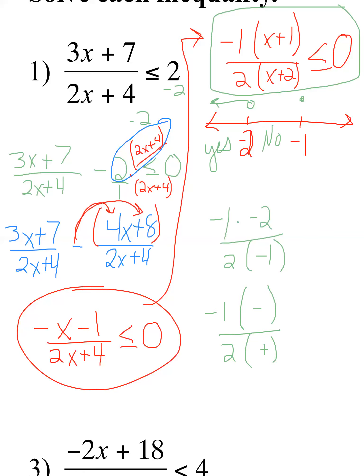For a number greater than -1, I'll pick 0. Plugging in 0: numerator gives -1 × (0 + 1) = negative; denominator gives 2 × (0 + 2) = positive. Negative over positive is negative — that's ≤ 0, so yes. Writing in interval notation: the solution is (-∞, -2) ∪ [-1, +∞). I go from negative infinity up to -2 (not included), then jump to -1 (included) and go to positive infinity.